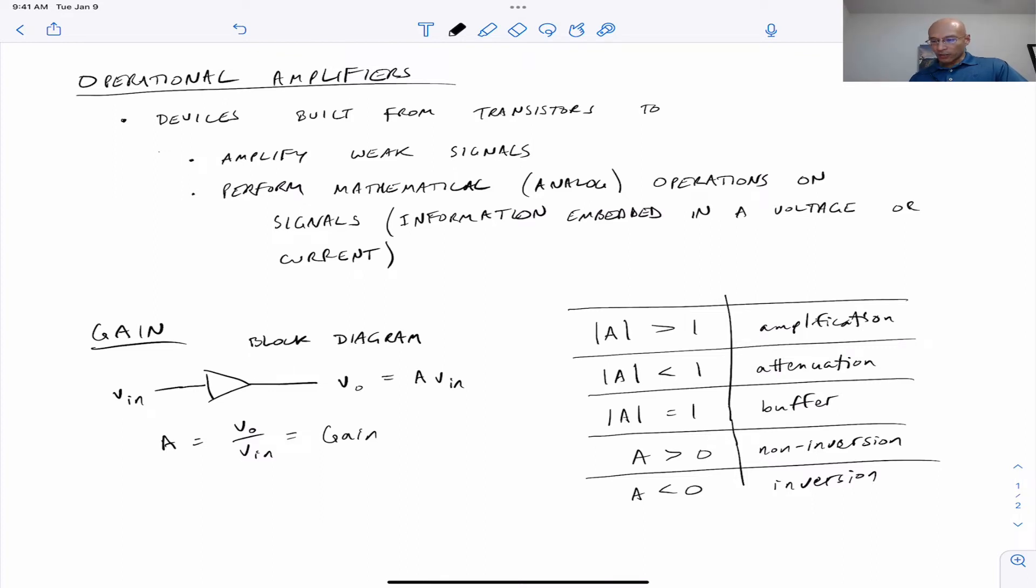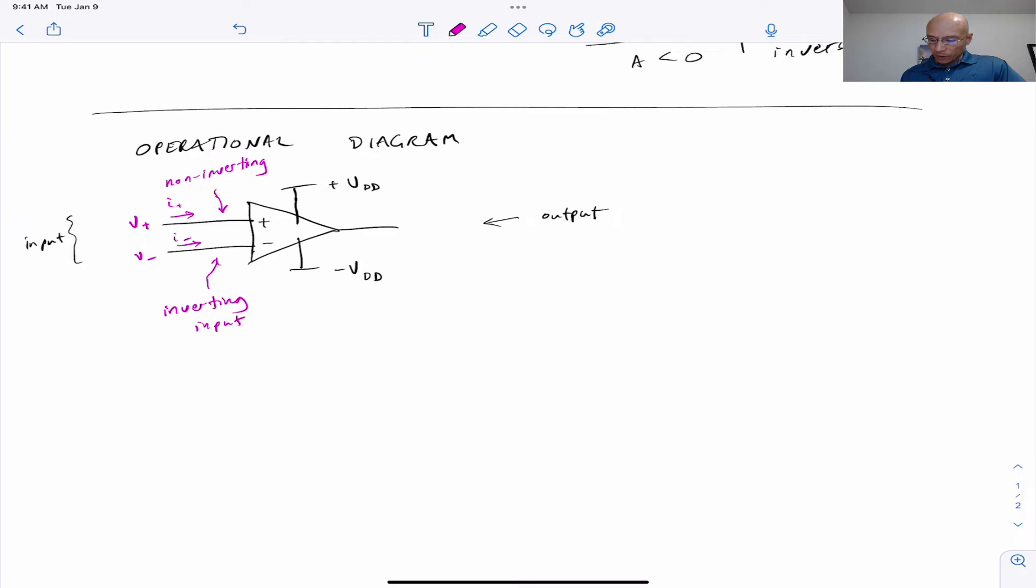Now we can introduce the operational amplifier. So we'll now look at a schematic diagram that's more specific than this block diagram. So here is a schematic diagram for an operational amplifier. It has two input terminals. One of them is marked with a minus sign and the other one is marked with a plus sign. So we'll call this the inverting input. And this is the non-inverting input. We'll assume that there are voltages here V minus and V plus. And then we can also assume currents entering I plus and I minus. And then we have an output. Maybe it has a voltage V zero and then a current I zero.